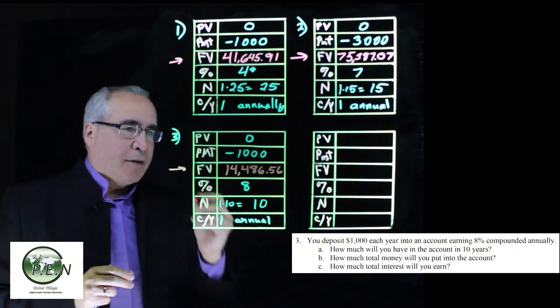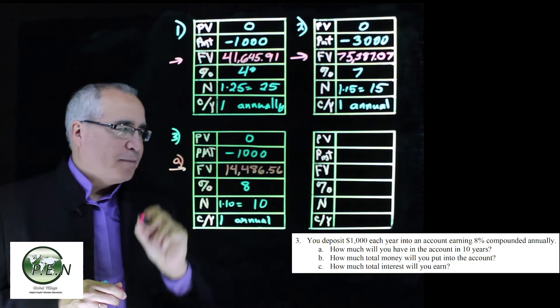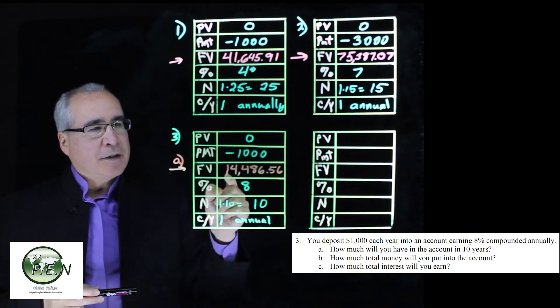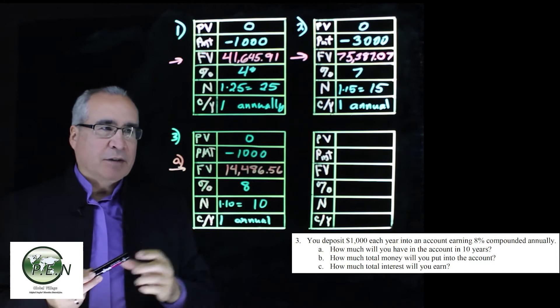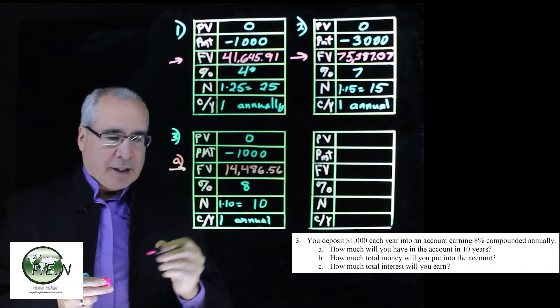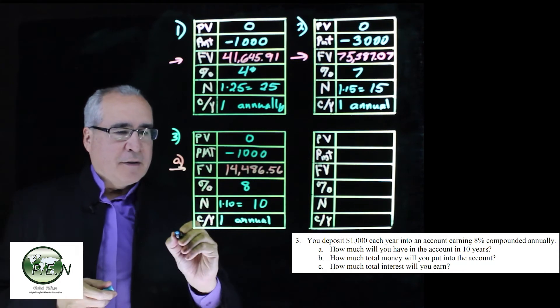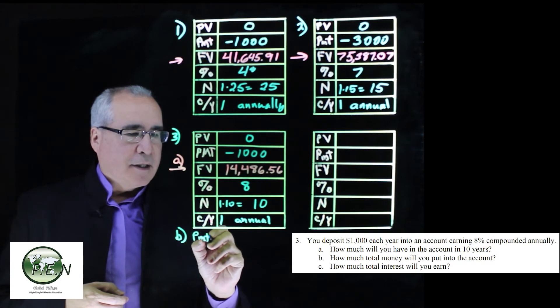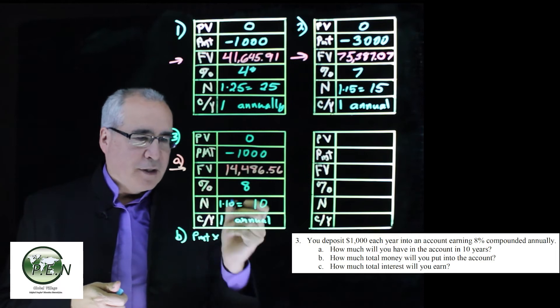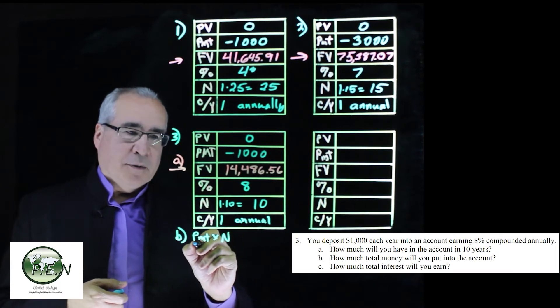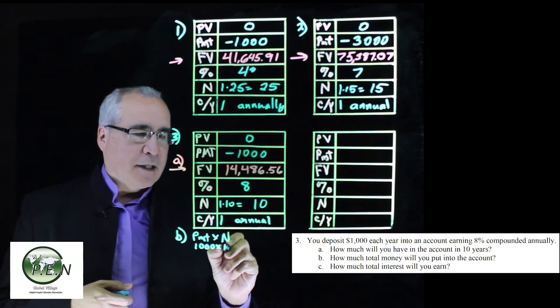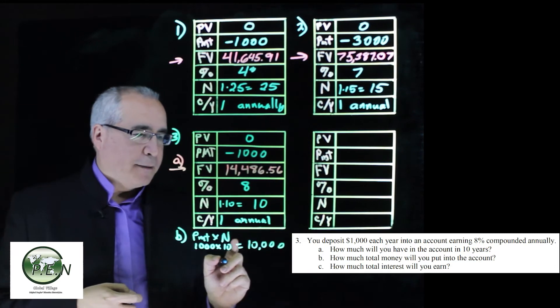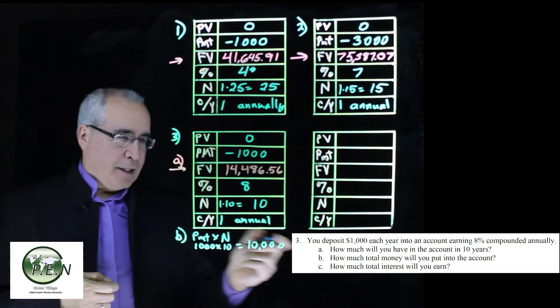Now that's the answer to the A question. The B part is how much money will we put into this account. Let's think about it. We're putting $1,000 every year for 10 years, $10,000. But to formalize that a little bit, the B question is that we will always take the amount of the payment times the number of periods, which is what we're listing as N. So we'll take our $1,000 times 10, and that gives us $10,000 that we put in. That's our answer for the B part.